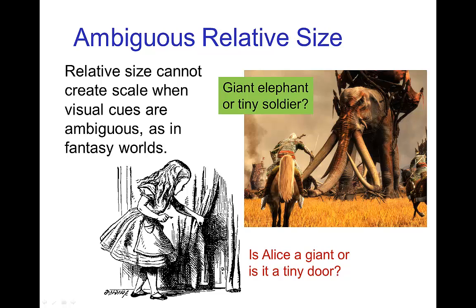Similarly with Alice in Wonderland — she's approaching this door. Either she's normal size and the door is tiny, or the door is normal size and she's a giant. Again, because of the ambiguity, it's challenging to establish scale and size in these sorts of fantasy worlds.